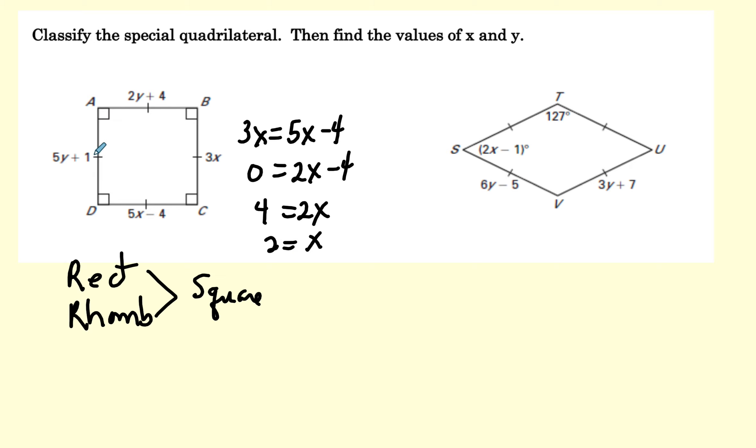And I can set these two equal to each other. So this is 2Y plus 4 equals 5Y plus 1. This will be 4 equals 3Y plus 1. So 3 equals 3Y, and Y will be equal to 1. So this is what X and Y will be.